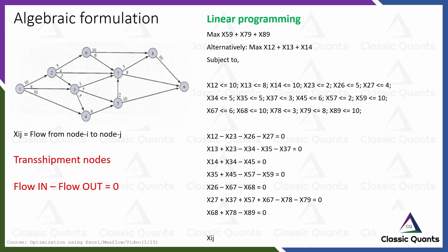To formulate the problem, let us first define the decision variable. xij is the decision variable, representing the flow that is occurring from node i to node j. The objective is to find the maximum flow arriving at node 9.